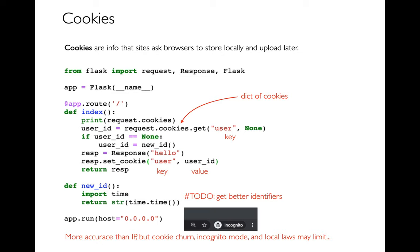Cookies are definitely more accurate than IP address, but there are problems. One is cookie churn — people can delete their cookies, which they actually do pretty often, so an old returning user might look like a new user. People often browse in incognito mode, which does not save any cookies, making it also look like a new user. And then there's the legal issue — sometimes local laws might not allow you to have cookies without the informed consent of the user. In particular, in the European Union, there are GDPR laws that govern that. I think cookies are in some way sketchy, and the law has been catching up to that.